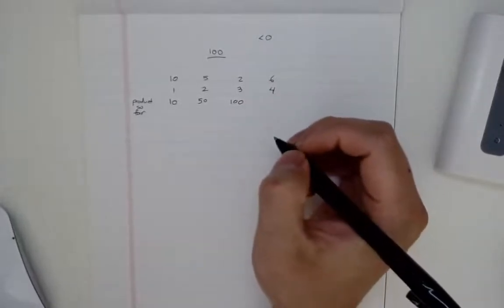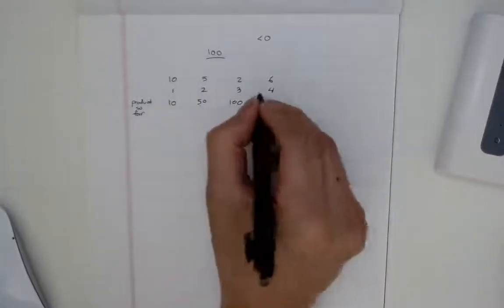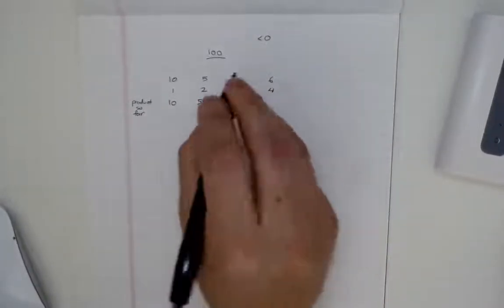What about here? Well, product so far is 100. So that means that we can't add this [10,5,2].